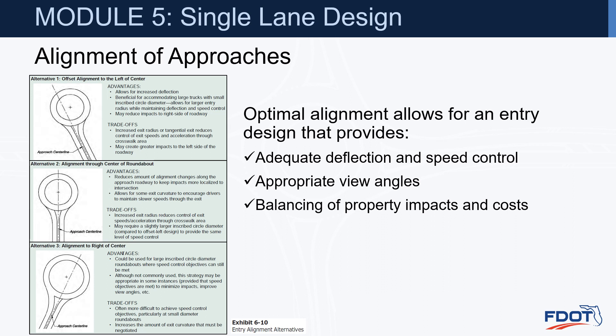We'll cover three different alternatives for alignment of approaches to roundabouts. Alternative number one is an offset left — the approach centerline is to the left of the center of the roundabout. Alternative number two has the approach running through the center of the roundabout. And alternative number three has the approach centerline to the right of center. The optimal alignment allows for an entry design that provides adequate deflection and speed control and appropriate view angles, while balancing property impacts and costs.